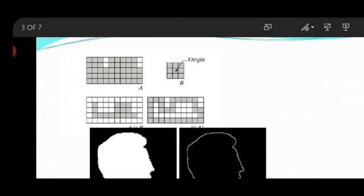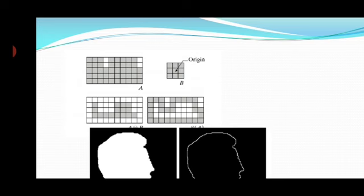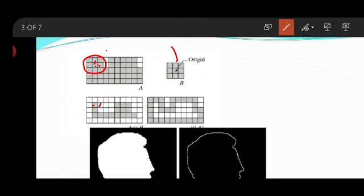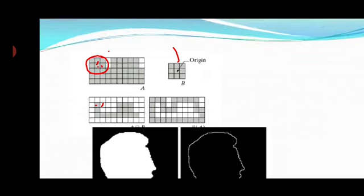When you go to a specific pixel — for example, second row, second column — and drag the structuring element so that its center pixel is there, it exactly matches. So we retain the content at that position. Moving to the next pixel, if it is not matching, it will be erased. As you drag the structuring element throughout the image, some pixels will be turned on and some will be erased.